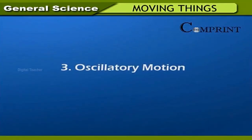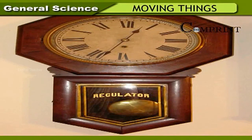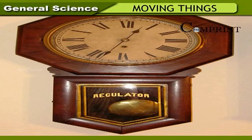Oscillatory motion was first observed by the scientist Galileo. He observed a hanging lamp in a church that was moving to and fro from one fixed point, and the motion was repeated for some time. Based on this observation, he made the pendulum clock.